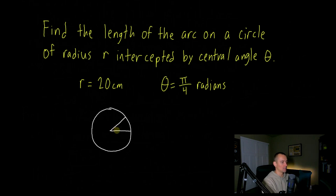This π/4 would be the radian measure here. Okay, so that's our central angle, that's θ. We have a radius of 20 centimeters, so the radius of this circle is 20 centimeters, from the center to the edge.